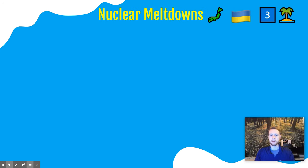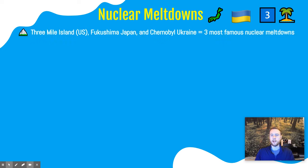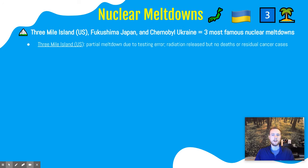Finally, we'll talk about some notable nuclear meltdowns in history and their environmental consequences. The three we should be aware of in APES are Three Mile Island in the United States, Fukushima in Japan, and Chernobyl in Ukraine. Three Mile Island occurred in the United States in 1979 — it was a partial meltdown due to a testing error and a valve that did not open to bring in cool water. There were no deaths, but detectable radiation was released. Follow-up studies have not detected increased cancer rates in the area, though it did scare the American public, and no new nuclear plants have been built in the United States since 1979.